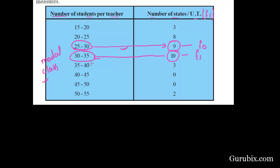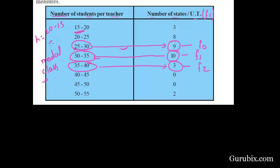So that is our F0. The frequency of the interval which comes just after the modal class interval is F2. The 35 to 40 interval comes just after the modal class interval, so its corresponding frequency is our F2. H is our class size, equal to the upper limit minus the lower limit of any class: 20 minus 15 equals 5. So H is equal to 5.